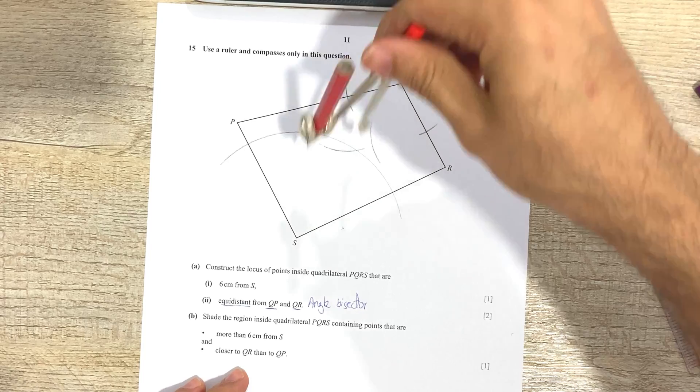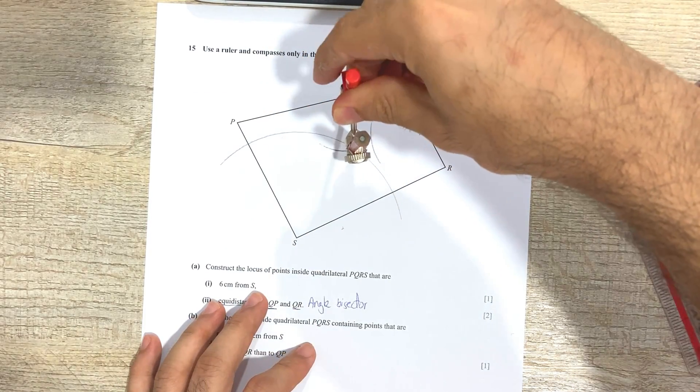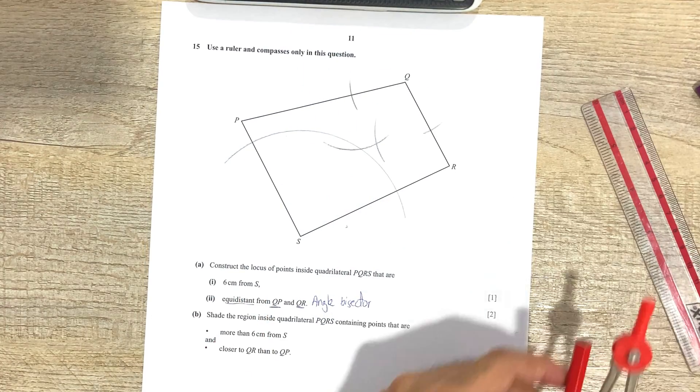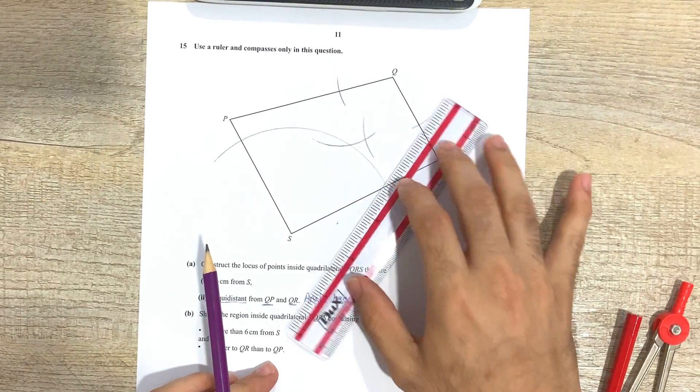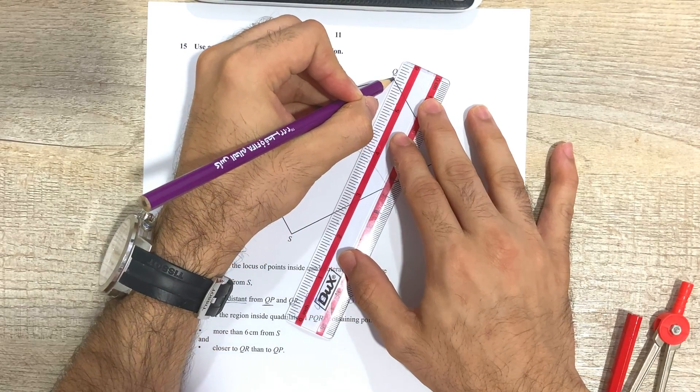Okay, and keep an eye on the arc that you've just made. Okay, so these two arcs are not intersecting. So that doesn't mean we haven't done anything wrong, it's just that we need to extend one of the two arcs. Once you've done that, then you complete your angle bisector, sorry, by joining point Q and the point where the two arcs are intersecting.